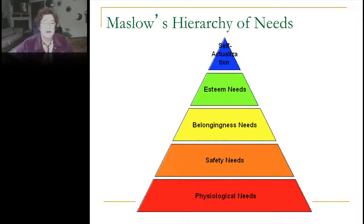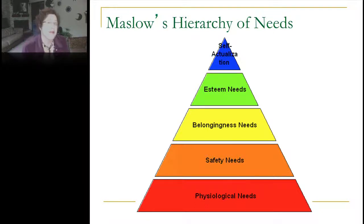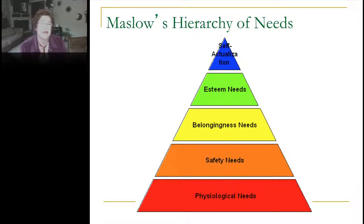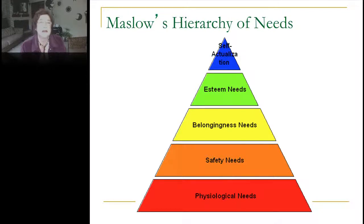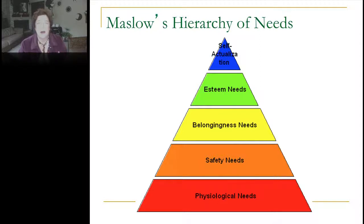Maslow was an important psychologist of the 1900s who described what he called the hierarchy of needs. Maslow says humans have a specific hierarchy, and until one level is met, you can't progress up the pyramid to the next. Our first needs are physiological needs, followed by safety needs, belonging needs, esteem needs, and ultimately self-actualization. If you were suddenly dropped in a city with no clothes, your first concern would be getting clothing, shelter, and food.